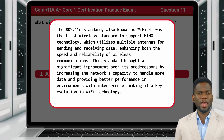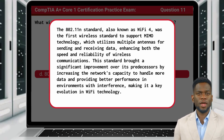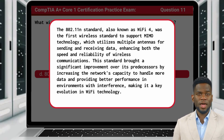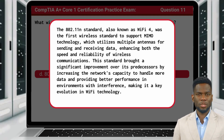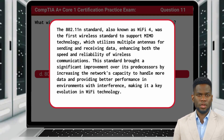was the first wireless standard to support MIMO technology, which utilizes multiple antennas for sending and receiving data, enhancing both the speed and reliability of wireless communications. This standard brought a significant improvement over its predecessors by increasing the network's capacity to handle more data and providing better performance in environments with interference, making it a key evolution in Wi-Fi technology.